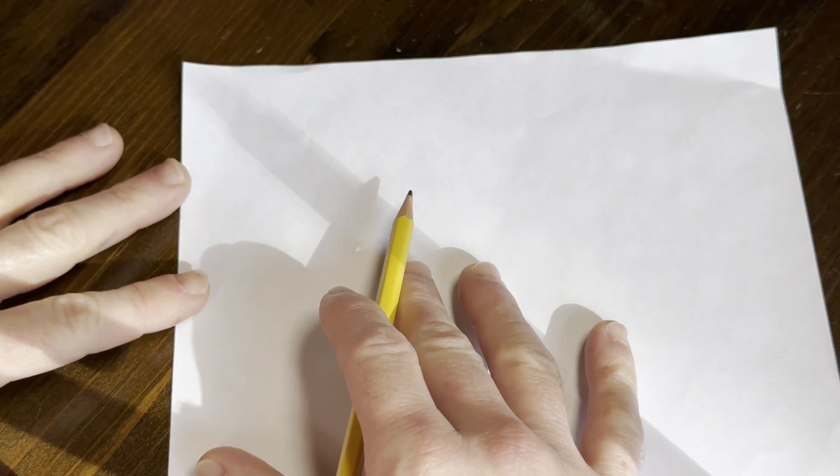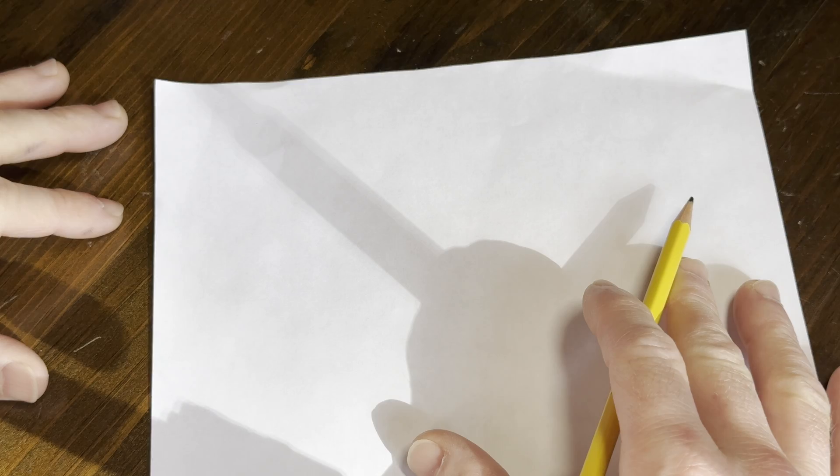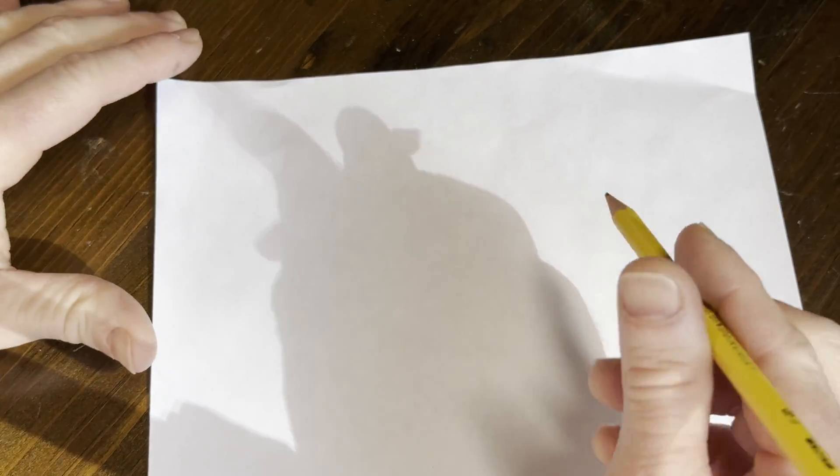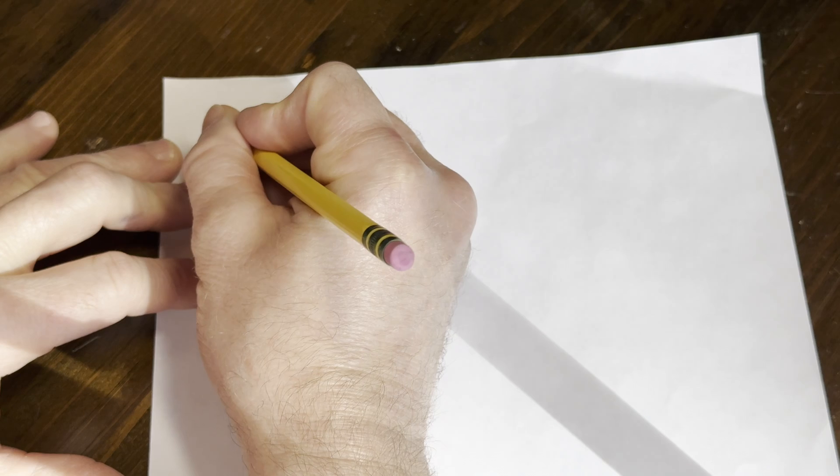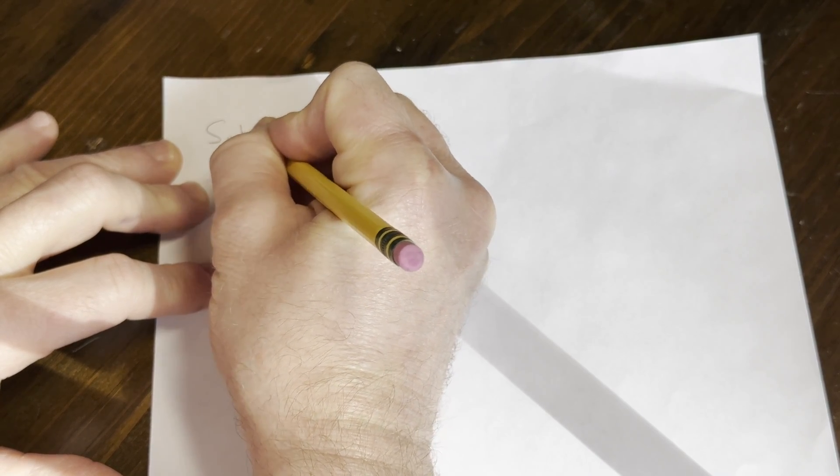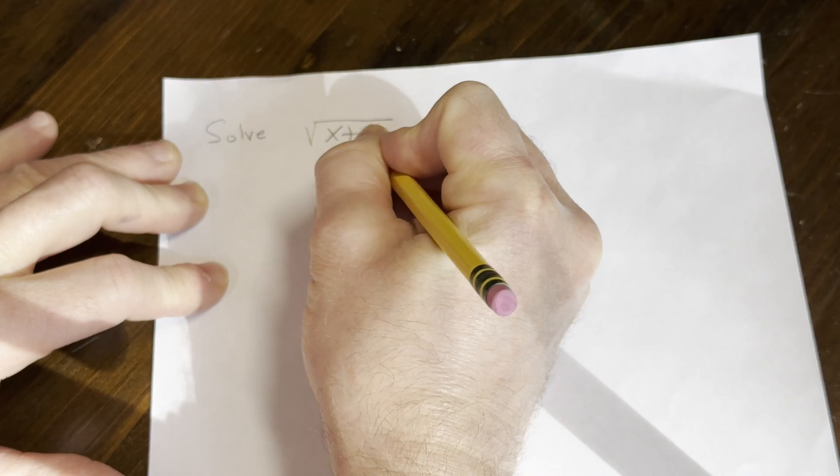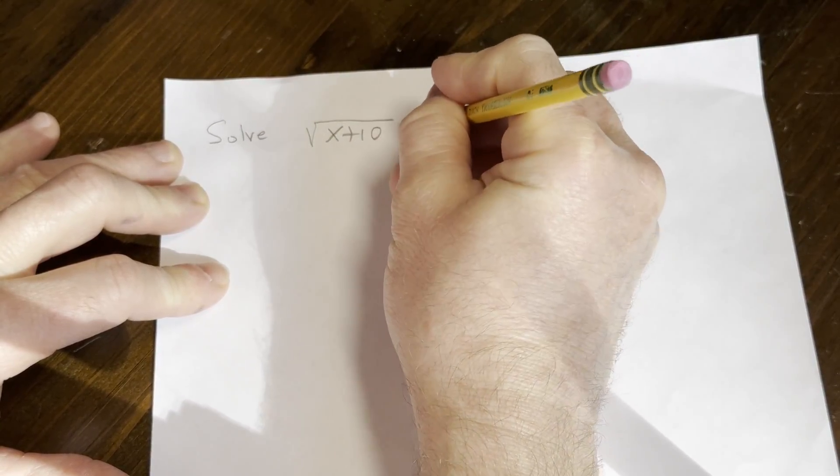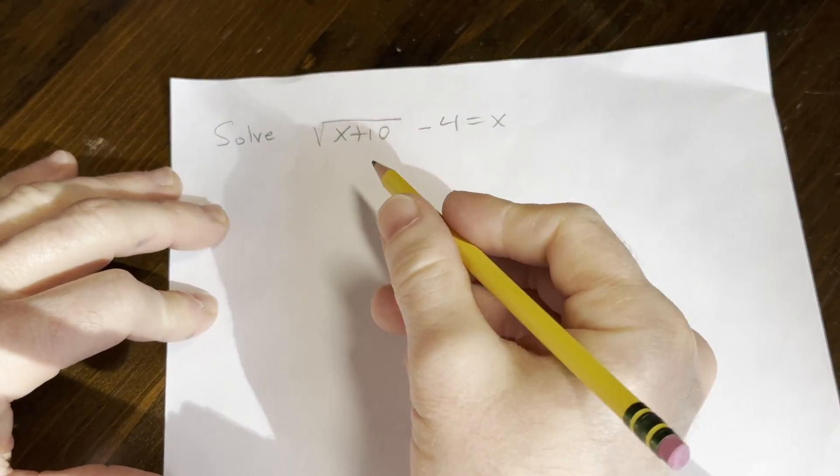Hello everyone. In this video, we are going to solve an equation involving a square root, and I'm going to go through the steps to show you how to do that. So the question we're going to be solving is to solve √(x+10) - 4 = x. And that's what we're going to be solving in this particular problem.